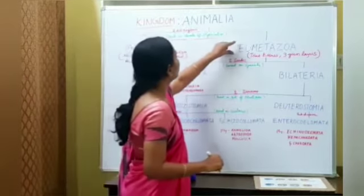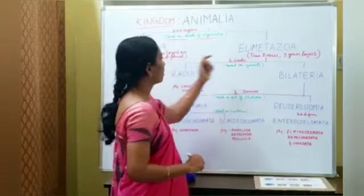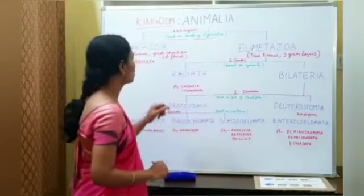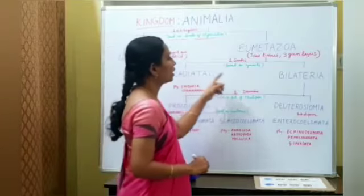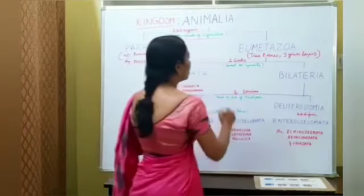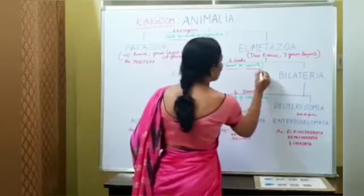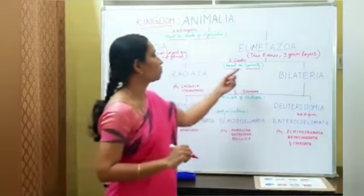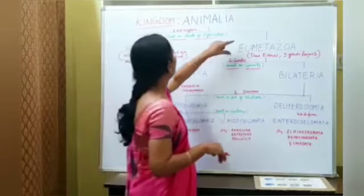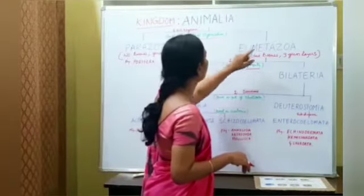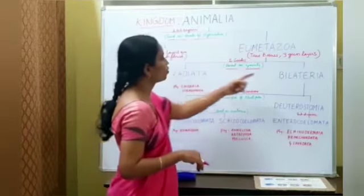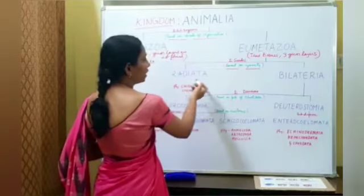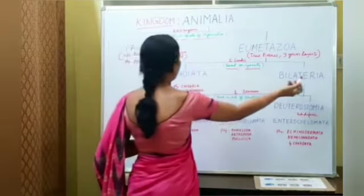The sub-kingdom Eumetazoa is divided into two grades based on symmetry. Those two grades are Radiata and Bilateria.